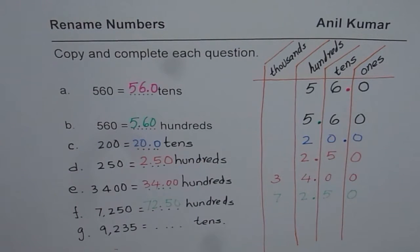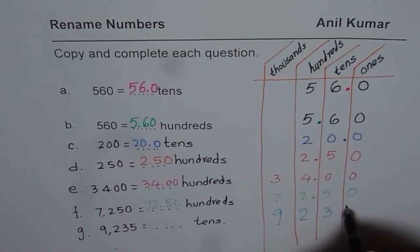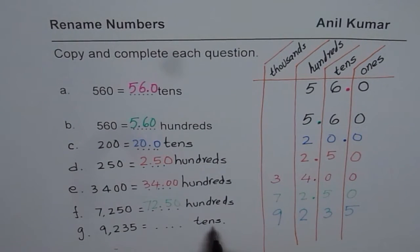The last number for us is 9,235. 9 comes in thousands place. So that is how you can rename numbers. Take the help of place value chart to do this exercise. I hope the concept is clear. Thank you and all the best.